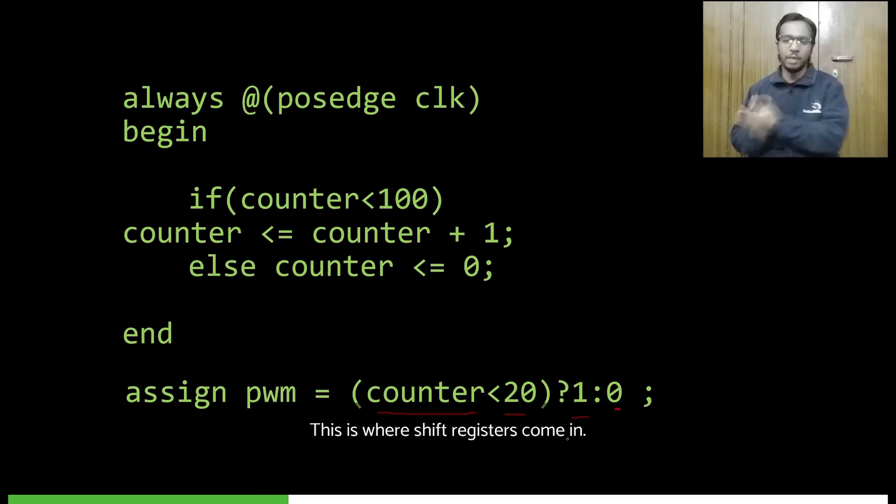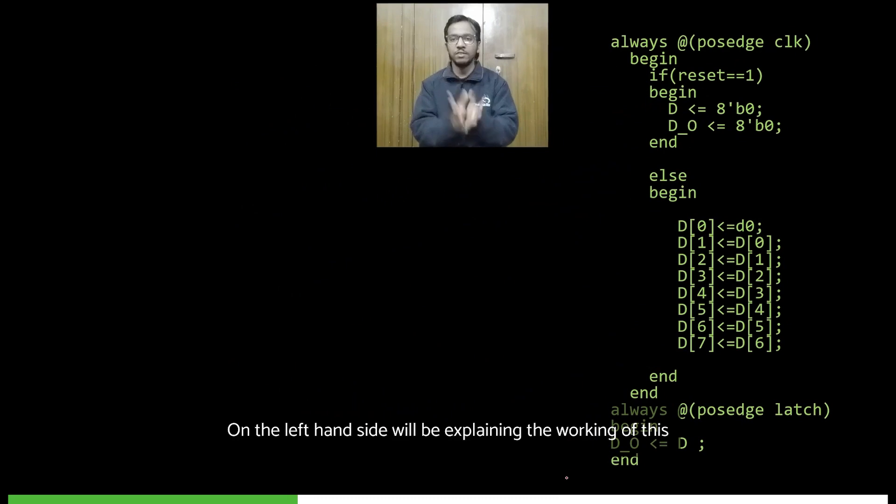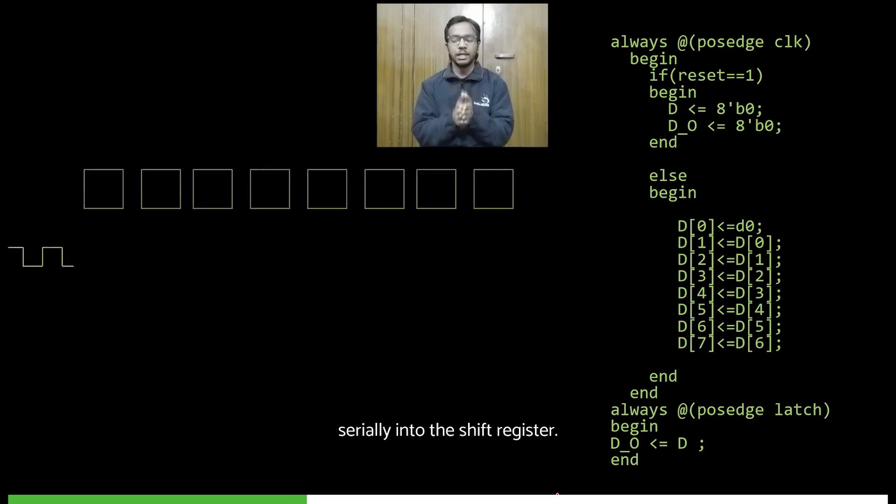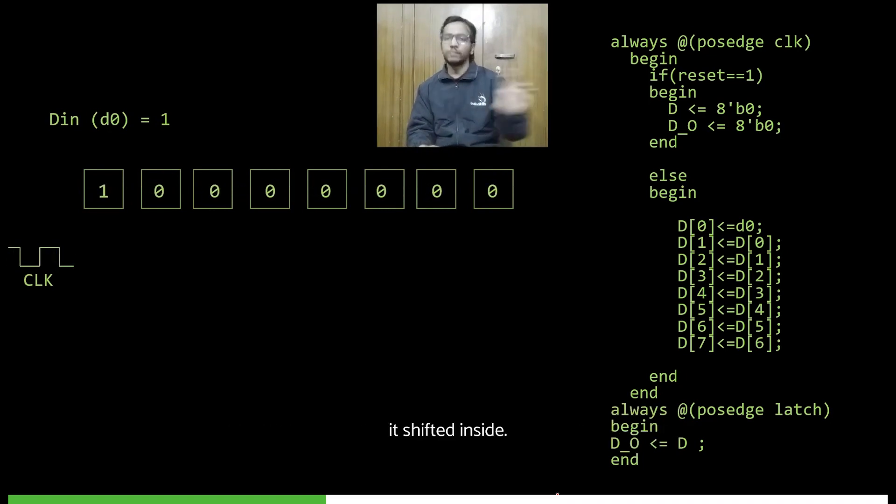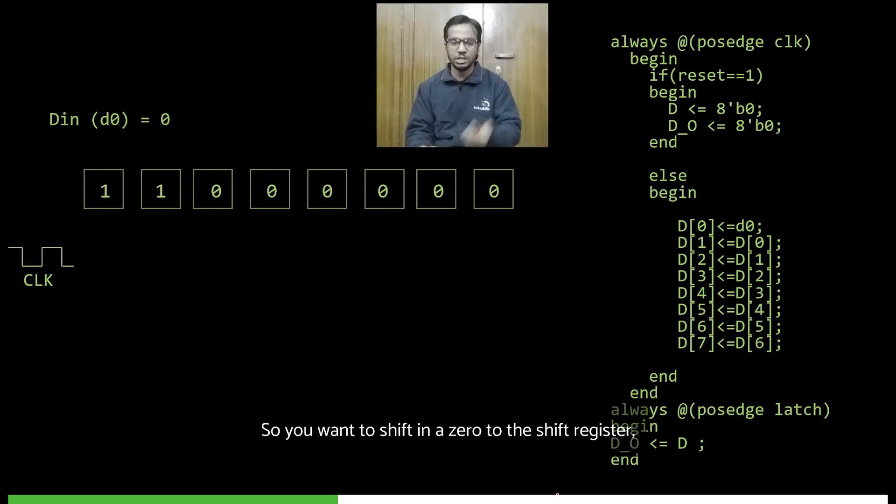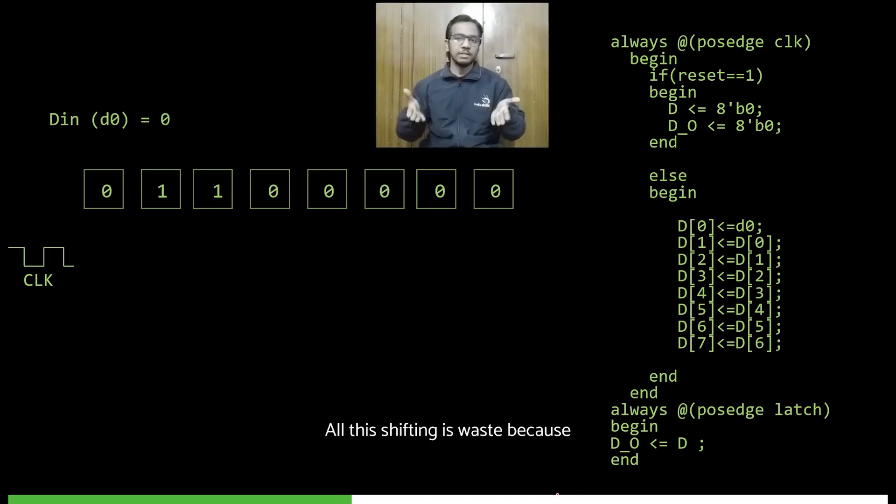So let's have a look right now at the shift register part of it. On the right-hand side you have the code, on the left-hand side we'll be explaining the working of this 8-bit shift register. Let's say you want to put in data serially into the shift register. When you want to put in one, you have the serial input Din set to one and you give a clock pulse to the shift register. Now, as soon as this clock pulse hits the shift register, this one gets shifted inside. When you give another clock pulse, another one gets shifted inside. So you want to shift in a zero to the shift register—you set Din to zero and then you give another clock pulse, so a zero gets shifted.